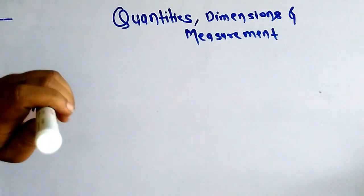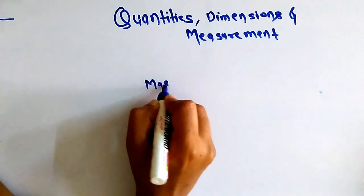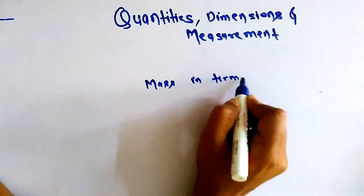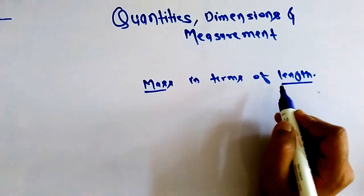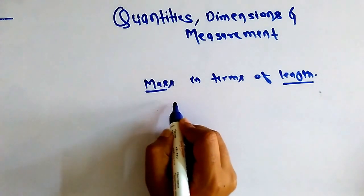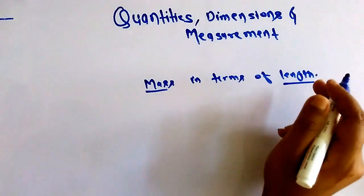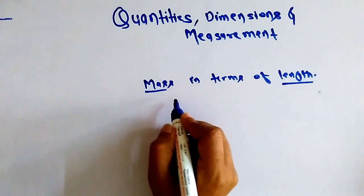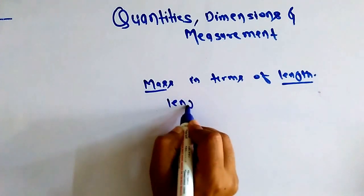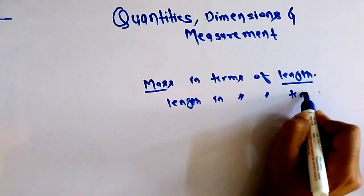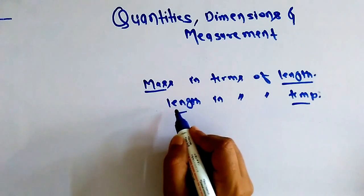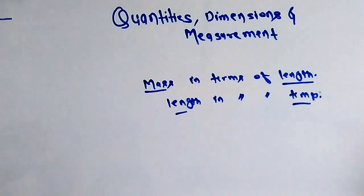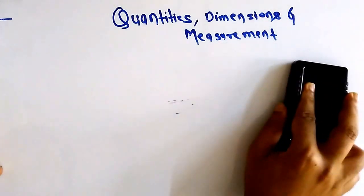Suppose I am saying we cannot explain mass in terms of length, since both are fundamental quantities. Similarly, we cannot explain length in terms of temperature, since both are fundamental quantities. Fundamental quantities are those which cannot be expressed in terms of another fundamental quantity — that is the defining characteristic.